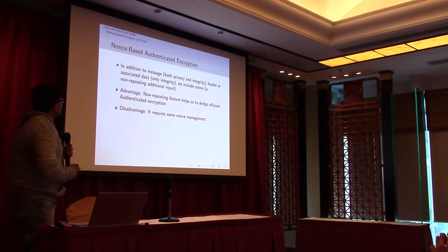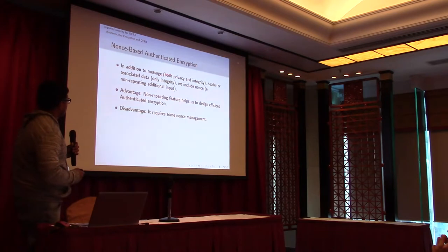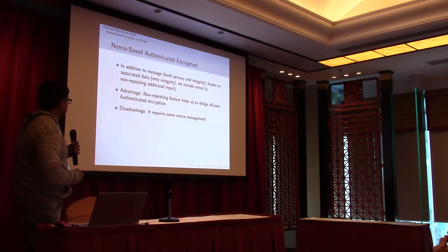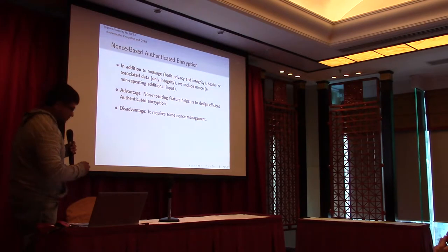So OCB3 is a nonce-based authenticated encryption. In a nonce-based authentication encryption, in addition to the message and header or associated data, there is also a nonce. The guarantee is nonce is some non-repeating additional input. The advantage is the non-repeating feature helps us to design efficient authentication schemes. However, the disadvantage is we need to do some nonce management.